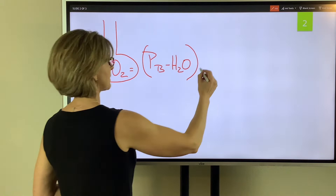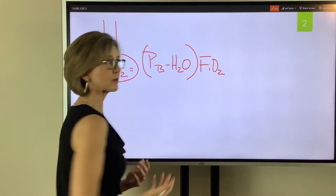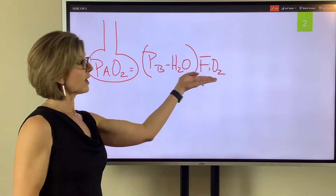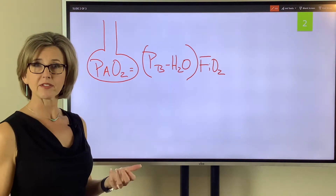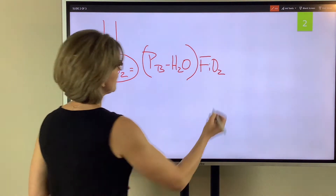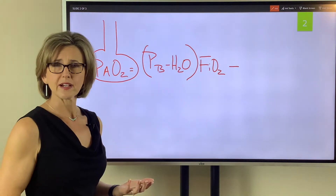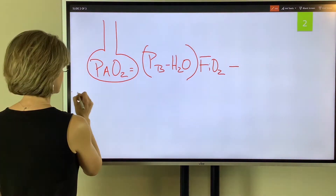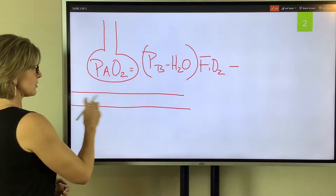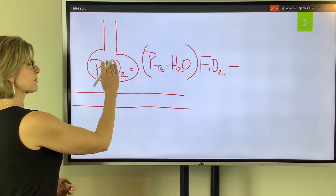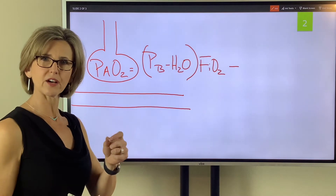Then we have to multiply this times the FiO2, or the percentage of oxygen we're inspiring, because the higher the percentage of oxygen we're inspiring, the bigger pressure we're going to have in the alveoli. We also have to remember that there is always a little bit of CO2 in the alveoli, because as blood flows through the pulmonary capillary bed, CO2 is dropped off in the alveoli to be exhaled out.